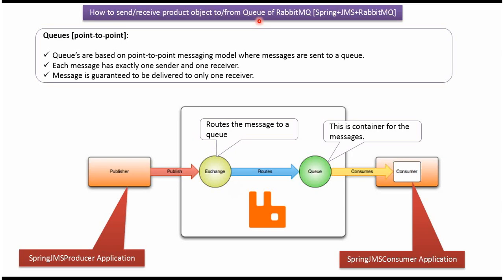In this video tutorial, I will explain how to send a product object to the queue of RabbitMQ and how to receive a product object from the queue of RabbitMQ. The publisher creates the message and sends it to the exchange. The exchange routes the message to the queue. The queue is the container for all the messages, and the consumer consumes the message from the queue. In this example, the message is a product object.